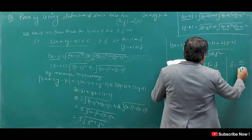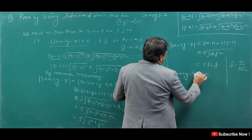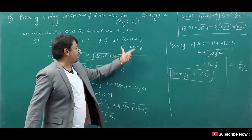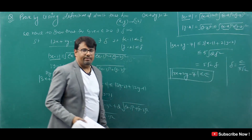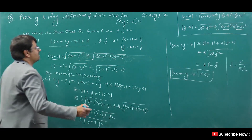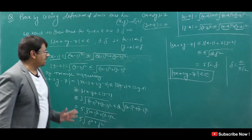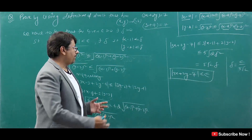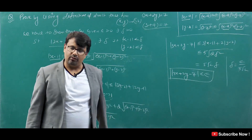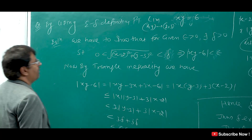So we take delta equal to epsilon upon 5√2 here, then the value that comes out will be epsilon. So we have proved here that |3x + 2y − 7| ≤ epsilon. So the limit is equal to 7. This is what we had to prove using the epsilon-delta definition — that |3x + 2y − 7| < epsilon, so the limit equals 7.